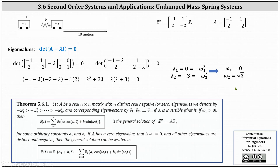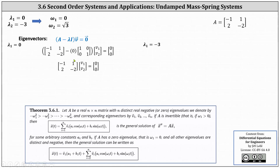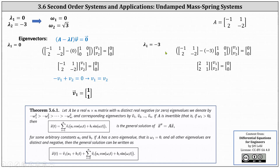Our next step is to determine the corresponding eigenvectors by solving the equation the difference of matrix A and lambda I times vector v equals the zero vector. For lambda sub one equals zero, the first equation gives us negative v1 plus v2 equals zero, or v1 equals v2, so eigenvector v1 equals the vector one, one. For lambda sub two equals negative three, simplifying gives us two v1 plus v2 equals zero, or v1 equals negative one-half v2. Letting v2 equal negative two gives v1 equals one, so the corresponding eigenvector v2 equals the vector one, negative two.